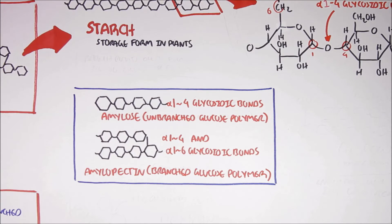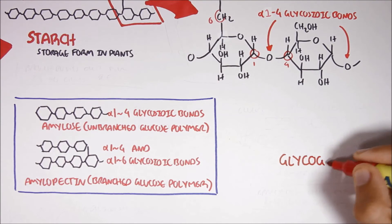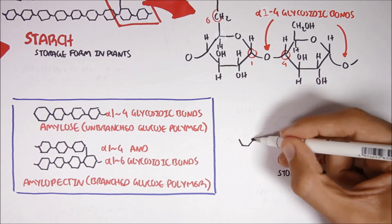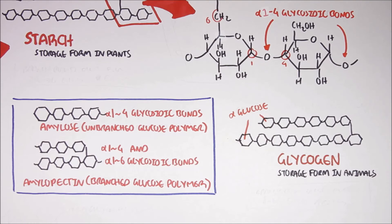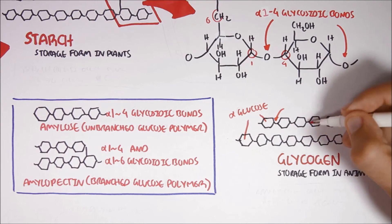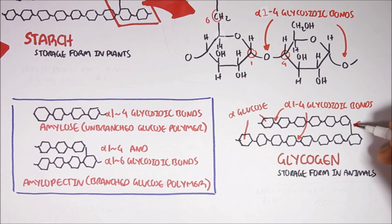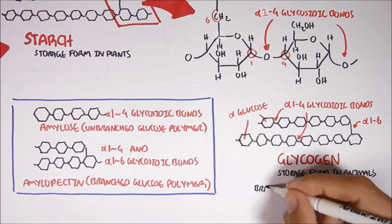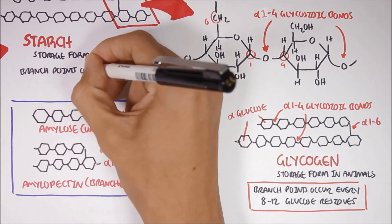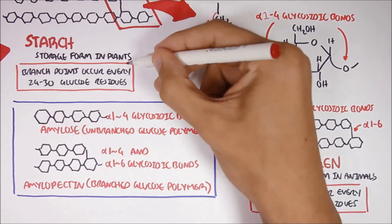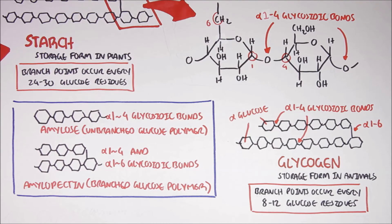Another good example of a polysaccharide is glycogen. Glycogen is a homopolysaccharide because it is made up of glucose. Glycogen can also be branched or unbranched, and it is a storage form of glucose in animals, such as humans. Starch and glycogen are actually very similar in structure — they both are made up of glucose and can either be branched or unbranched, so both contain amylose and amylopectin. The difference is that glycogen has branch points occurring every 8 to 12 glucose residues, whereas in starch these branch points occur every 24 to 30 glucose residues, so branching is more frequent in glycogen.